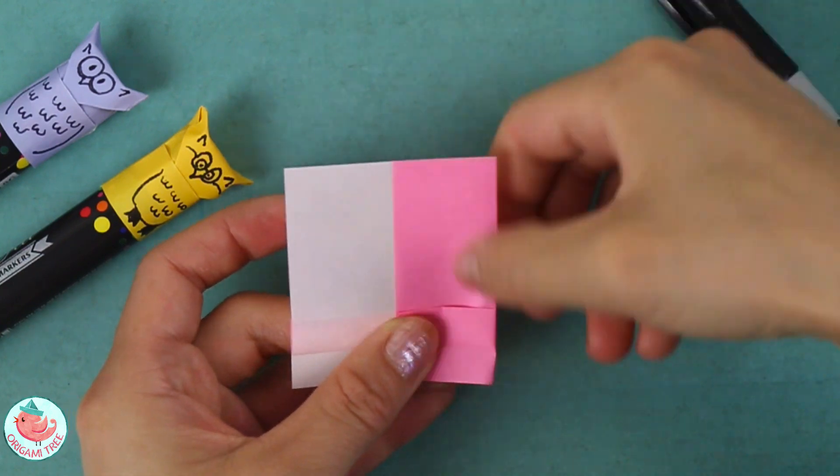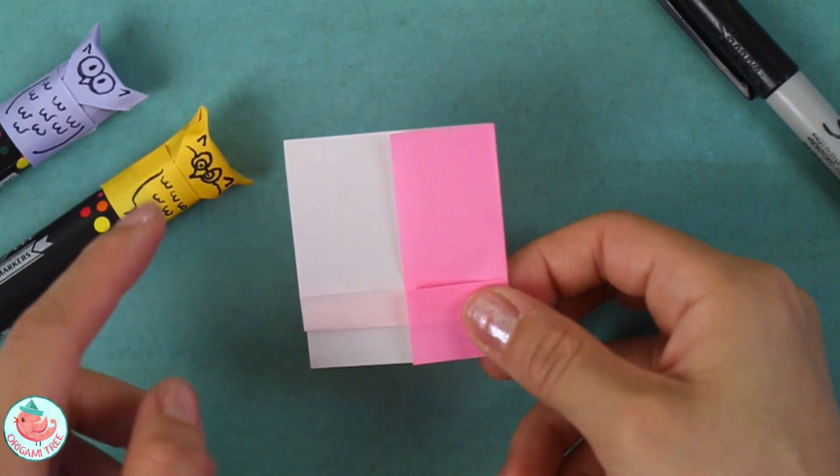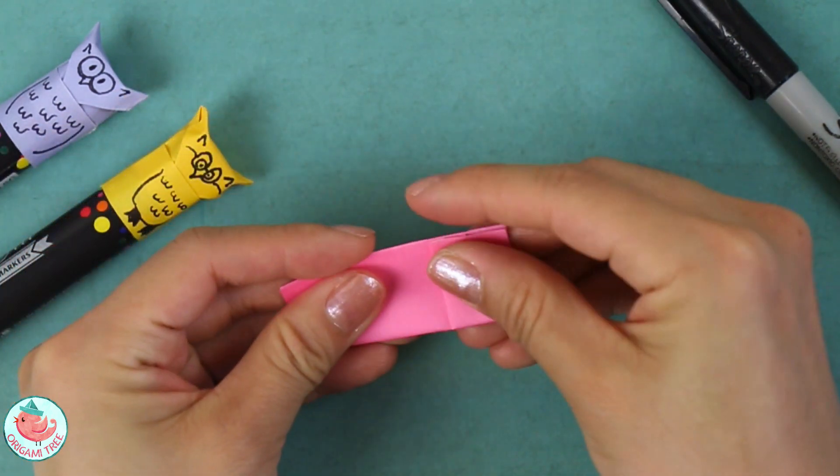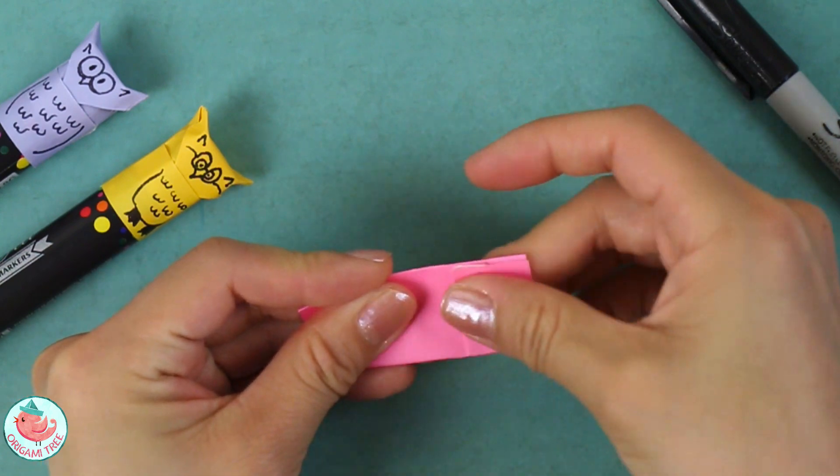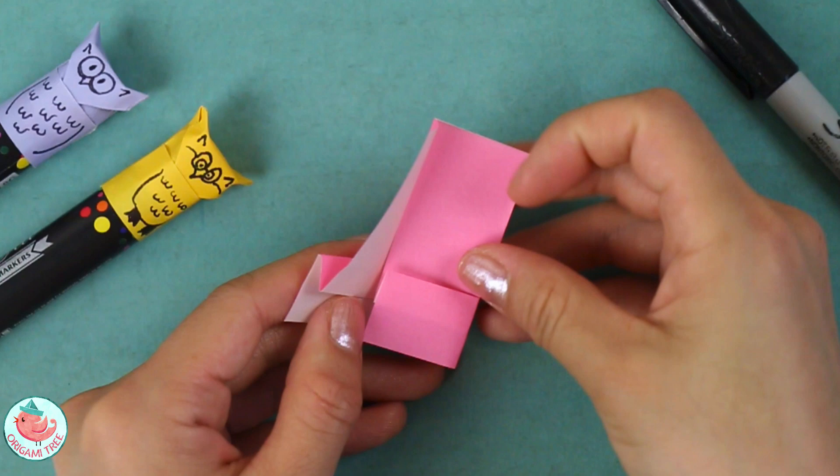Then take the other side and fold that over as well. Fold it in and crease it in. After that you want to open it up.